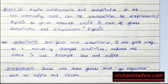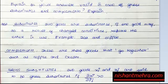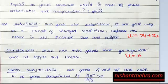Substitutes are two goods that satisfy a particular want, where one can be used in place of the other — for example, tea and coffee. Complements are goods that go together, such as pen and ink, or coffee and cream. For perfect substitutes, u = x1 + x2; for perfect complements, u = min(x1, x2).